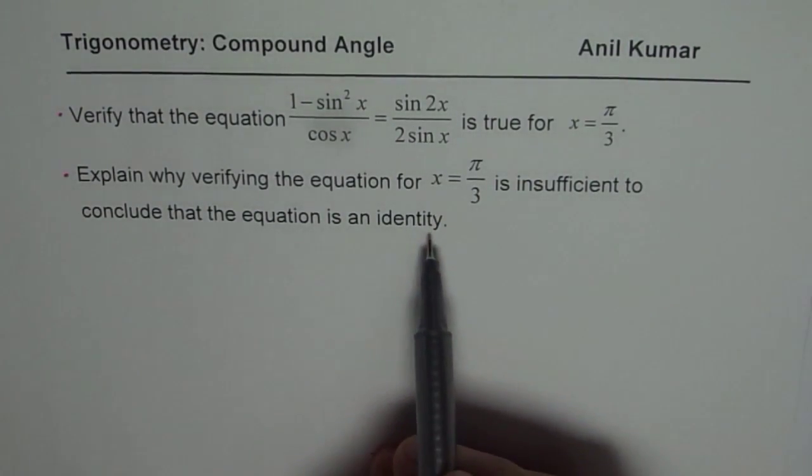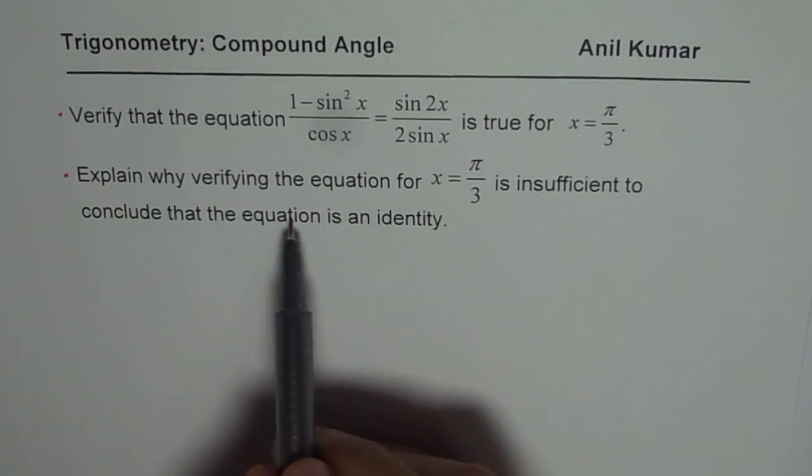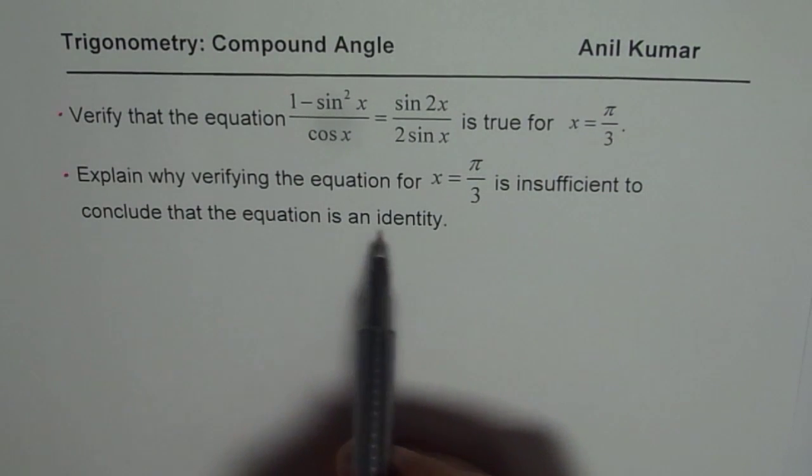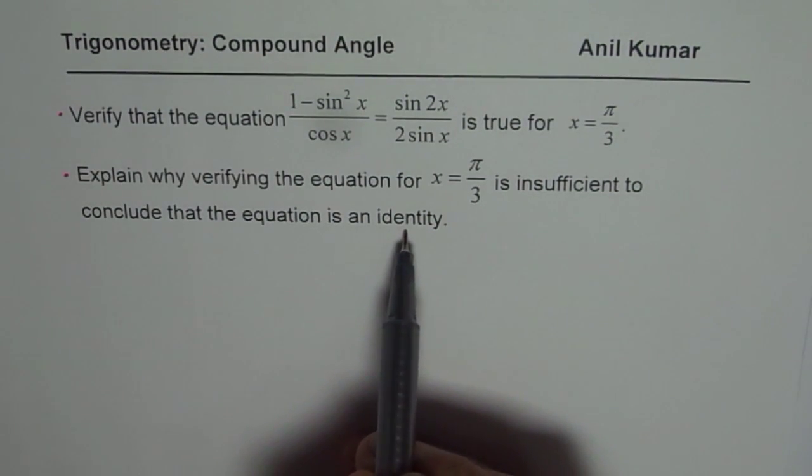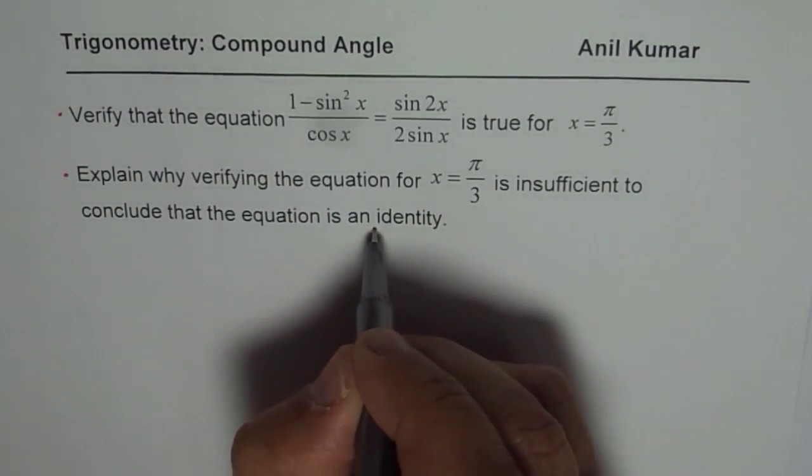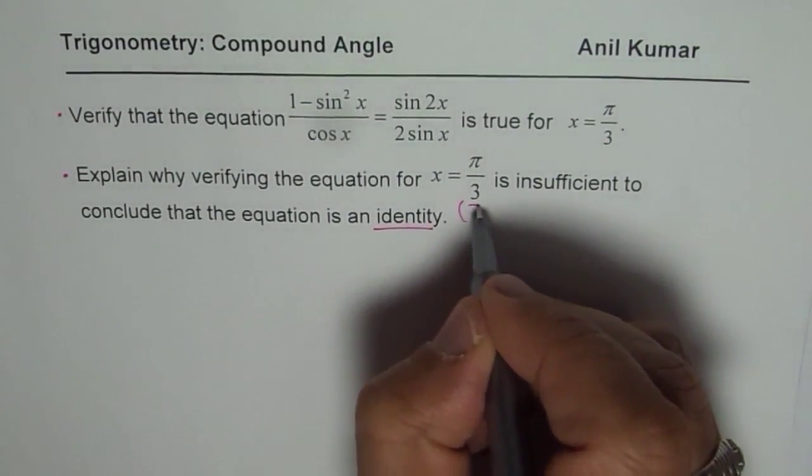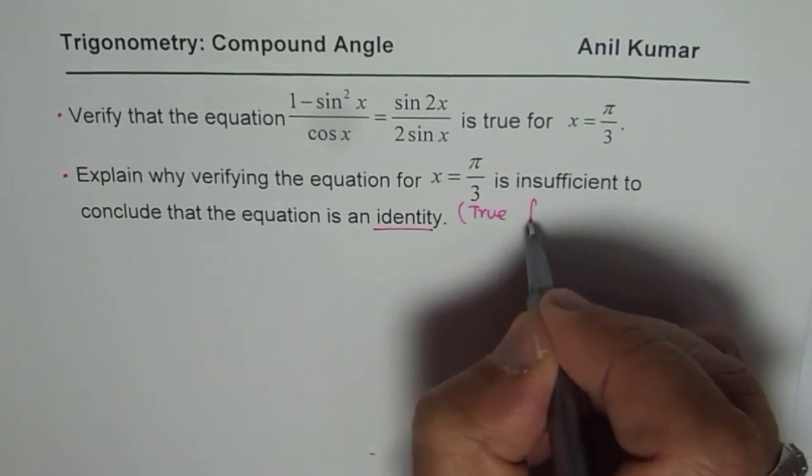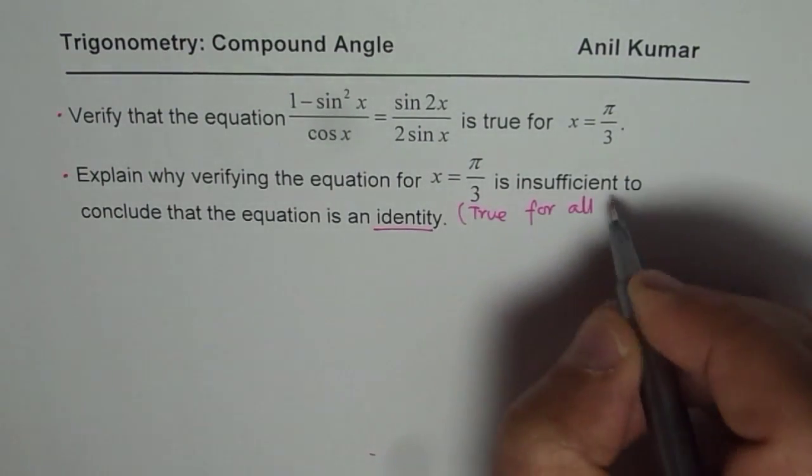So let's begin by answering the second part. An equation can have one or more solutions, but an identity is one which is true for all permitted values.